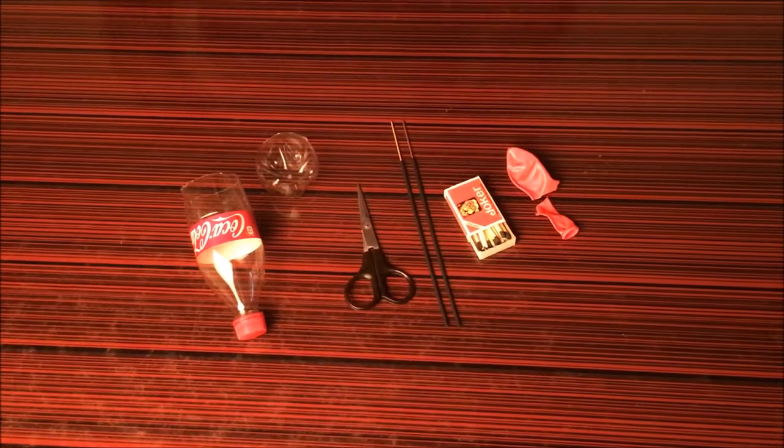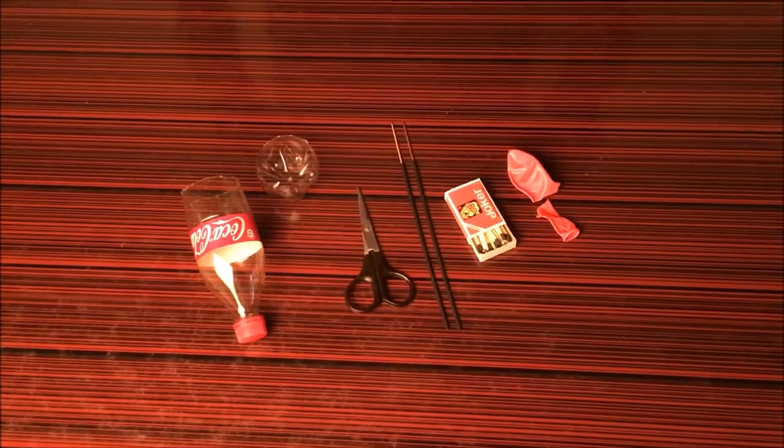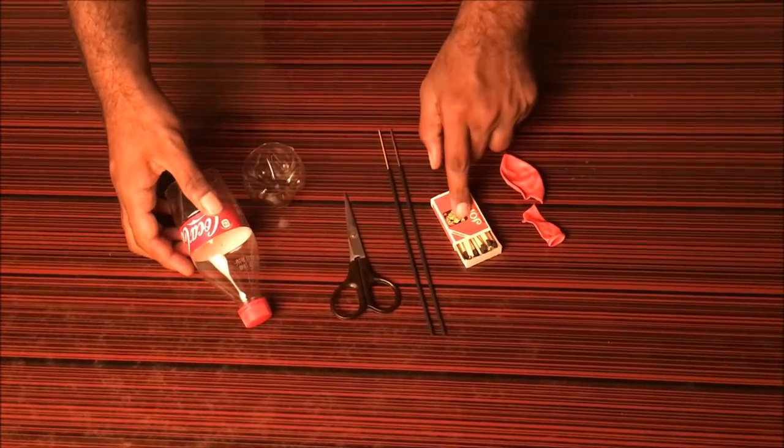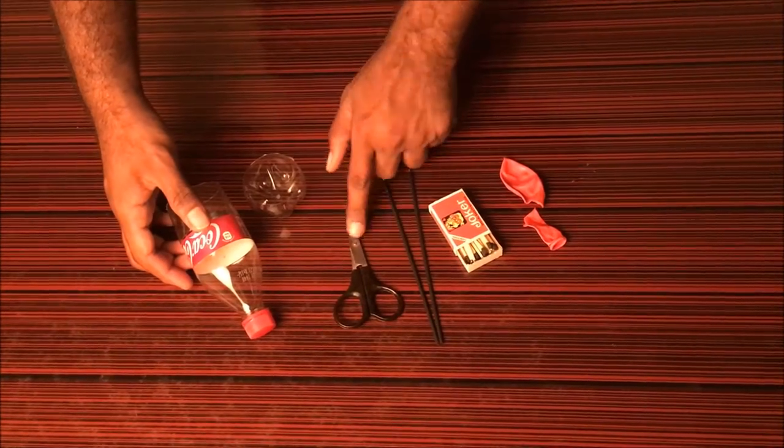All you need to make smoke rings is a pet bottle, a balloon, some matches, incense sticks, and a scissor.